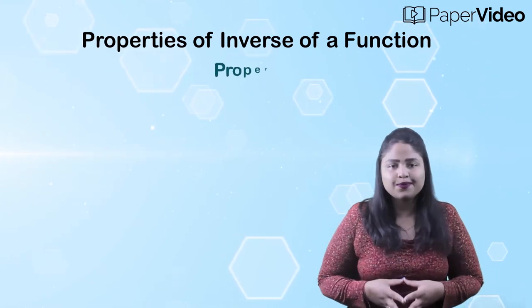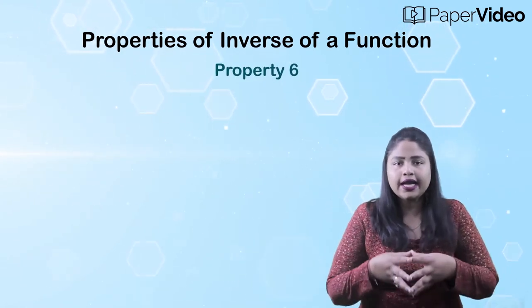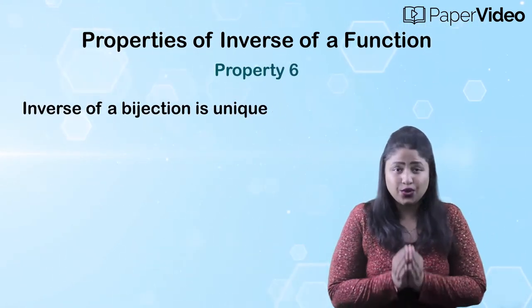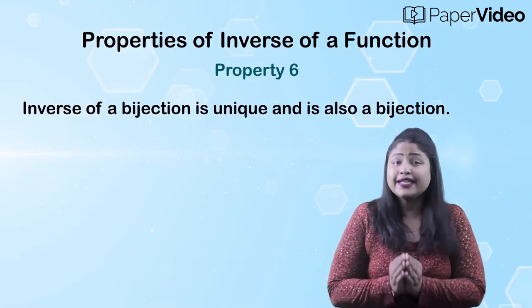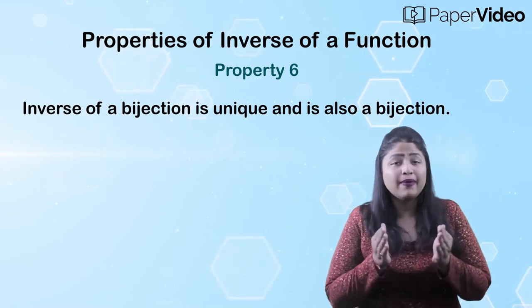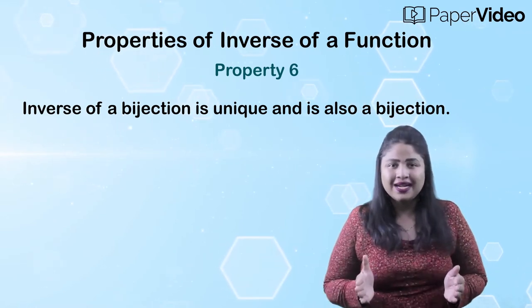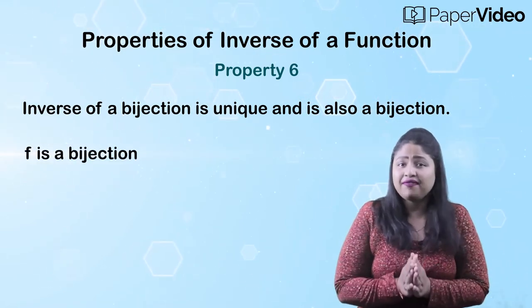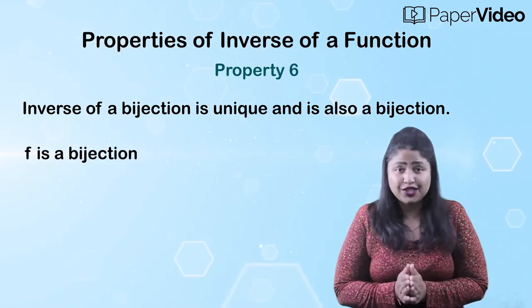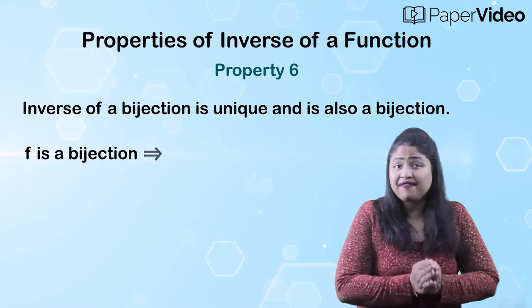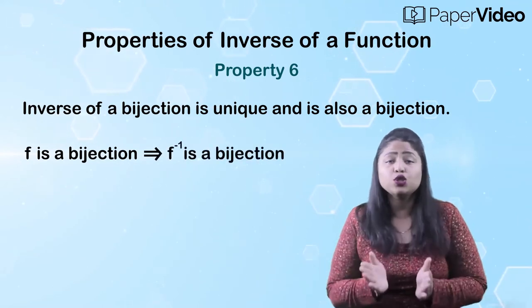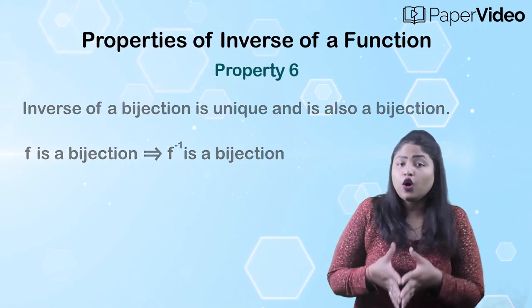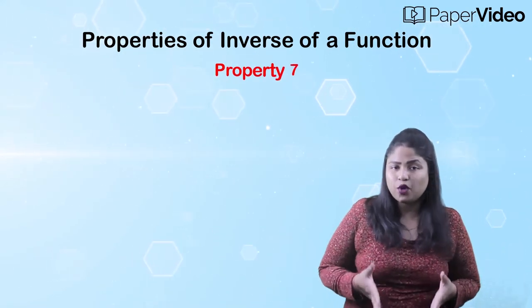According to the sixth property, the inverse of a bijection is unique and is also a bijection. This means that if f is a bijection, then f inverse will also be a bijection.